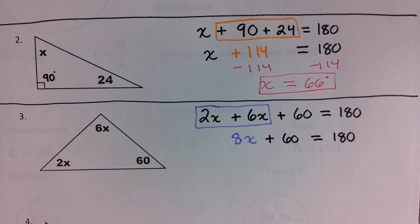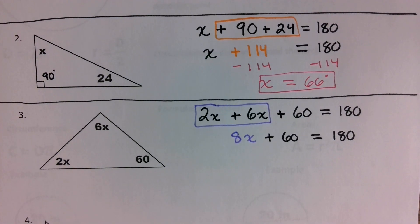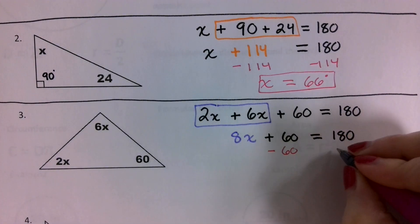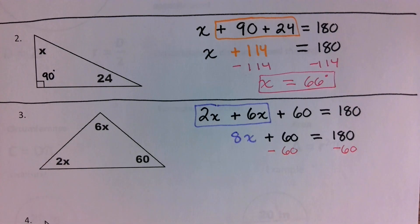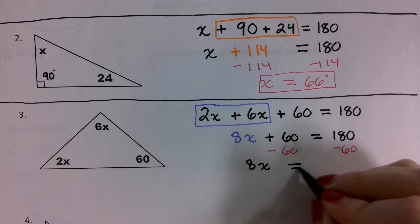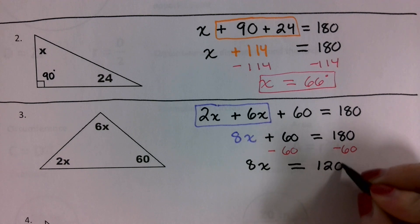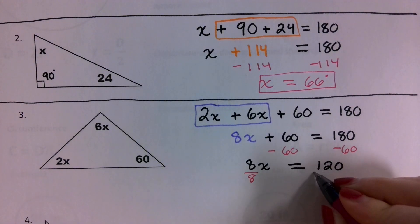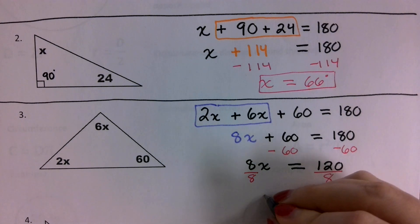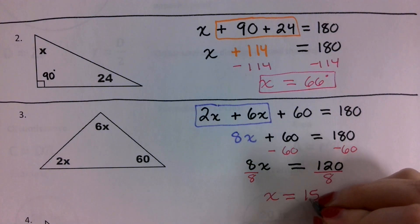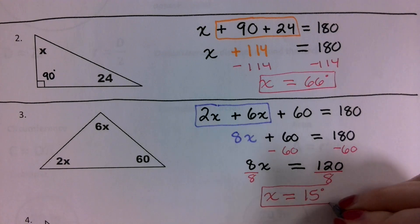What inverse operation do we need to do first? Subtract. We need to subtract the 60 from both sides first. By doing so, we are left with 8x is equal to 120. Then our last step is to divide by 8. What do we get when we take 120 and divide it by 8? 15. So we get x is equal to 15 degrees.